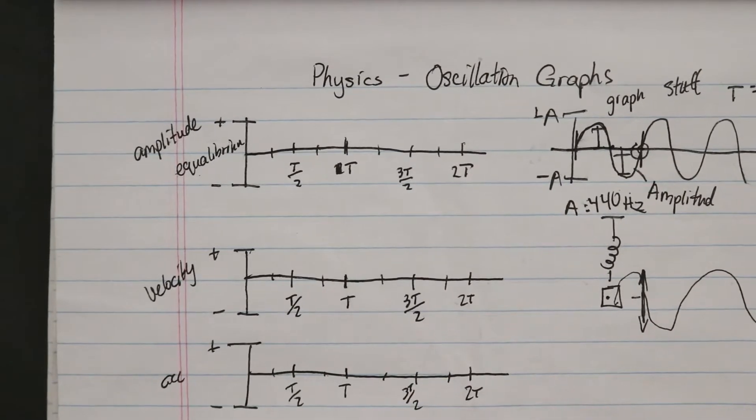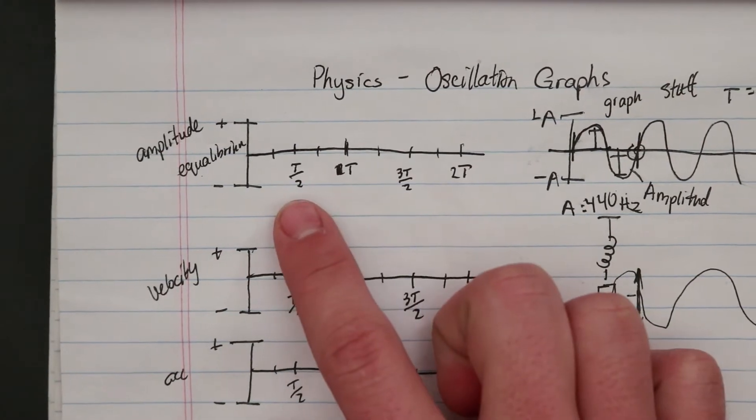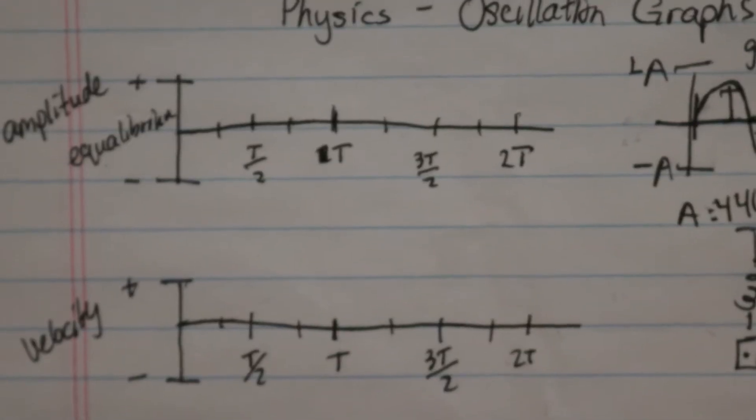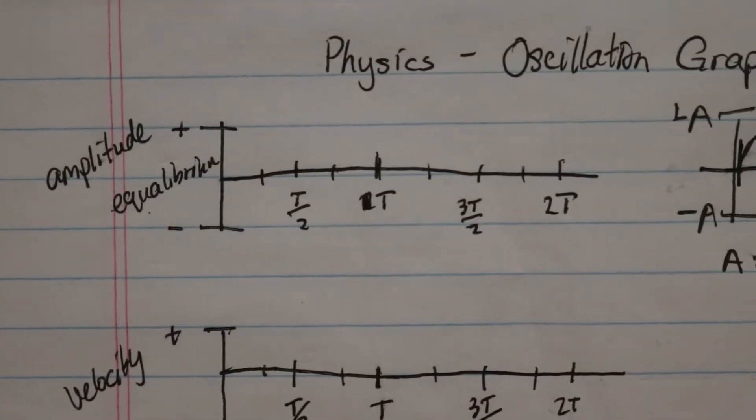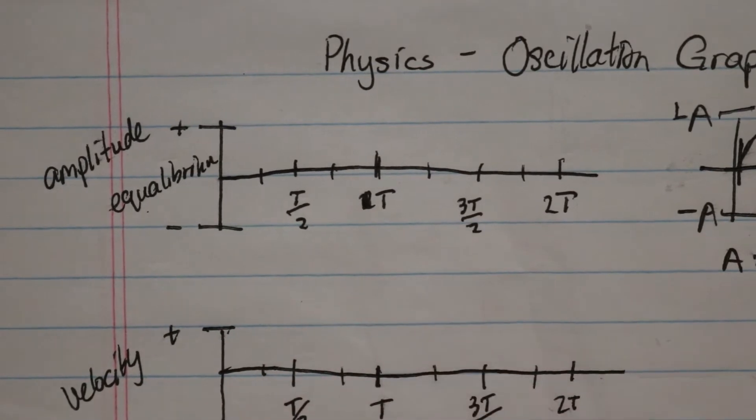Alright, so now we're going to get into the graphs, and this first one is going to be an amplitude time graph. Instead of graphing time here, what I've done is I've put T's here, and these T's represent the period of the wave, the period of the wave.